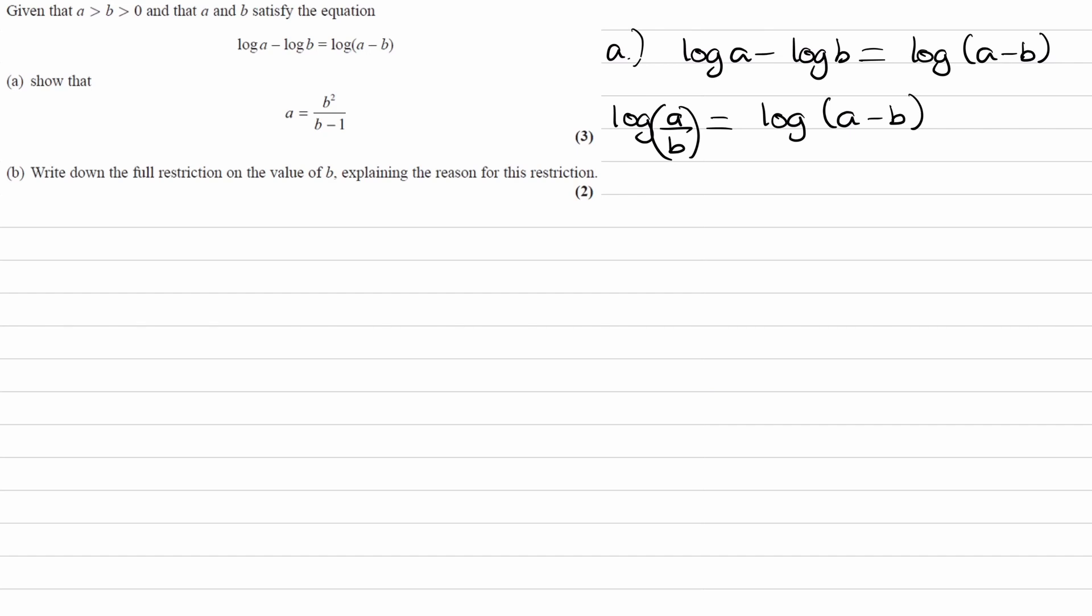That's by doing 10 to the power of both sides, because 10 to the power of something and log of something, or log to the base 10 of something, are inverse operations, so they cancel out. You don't have to write the 10 to the power of both sides, you can just get rid of the logs if you have it in this form. So we get A over B is equal to A minus B.